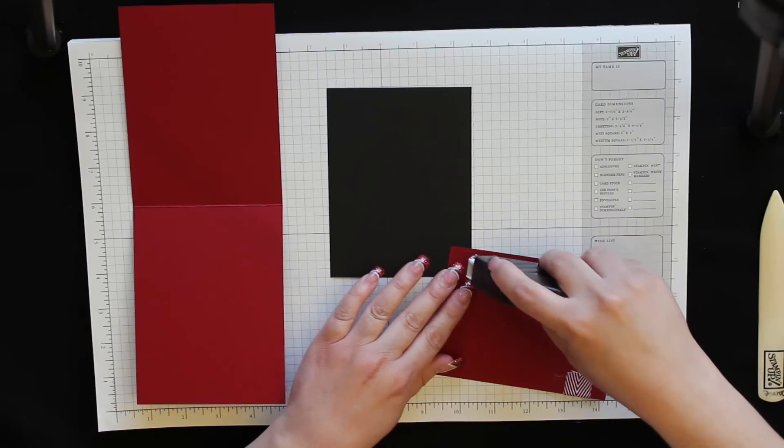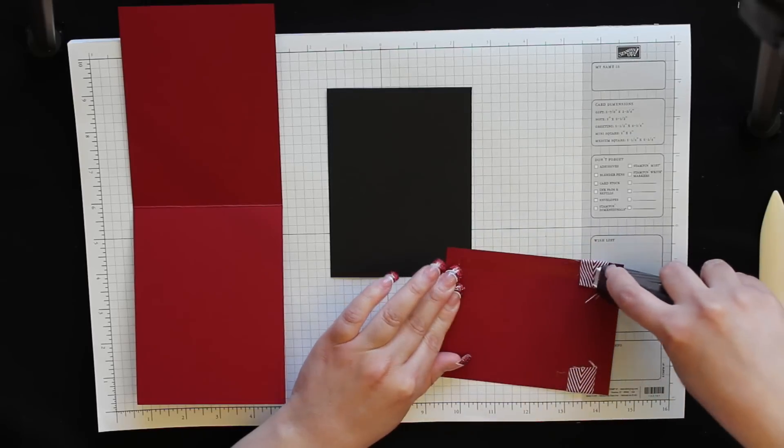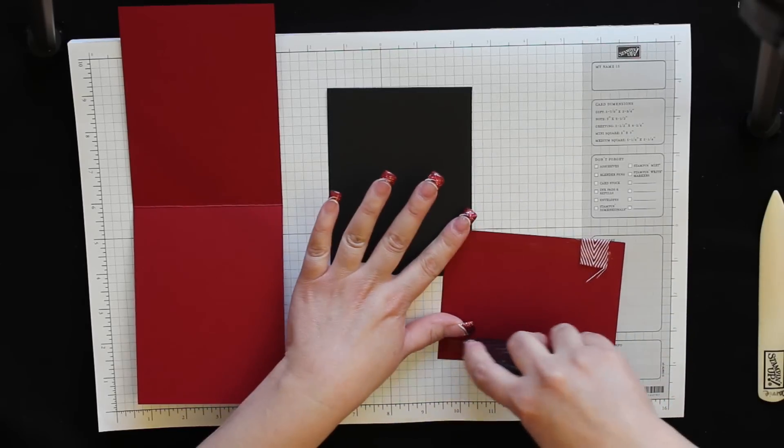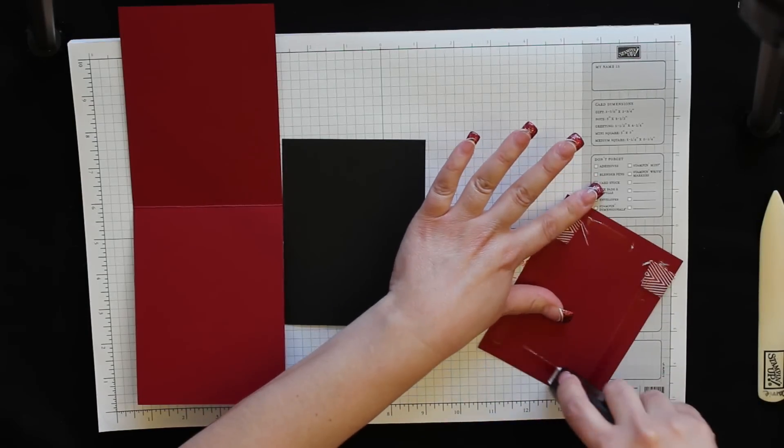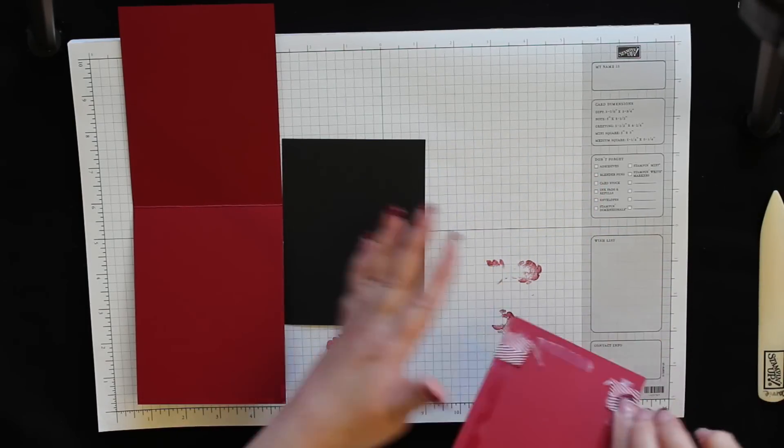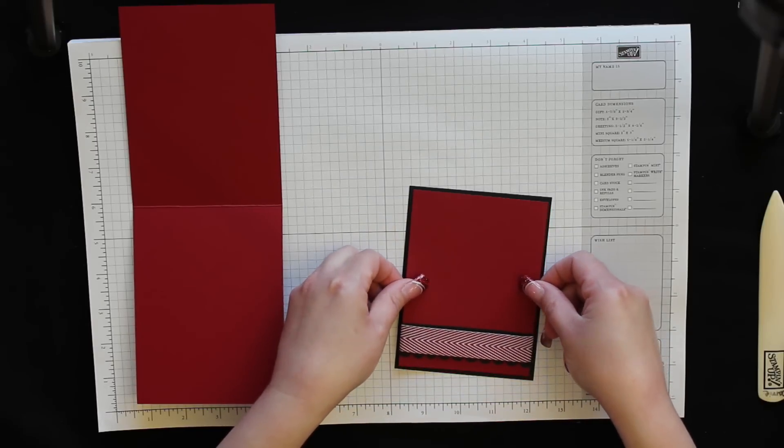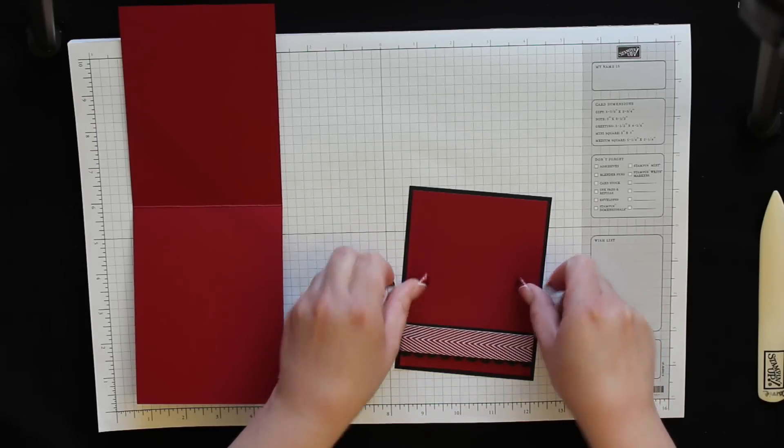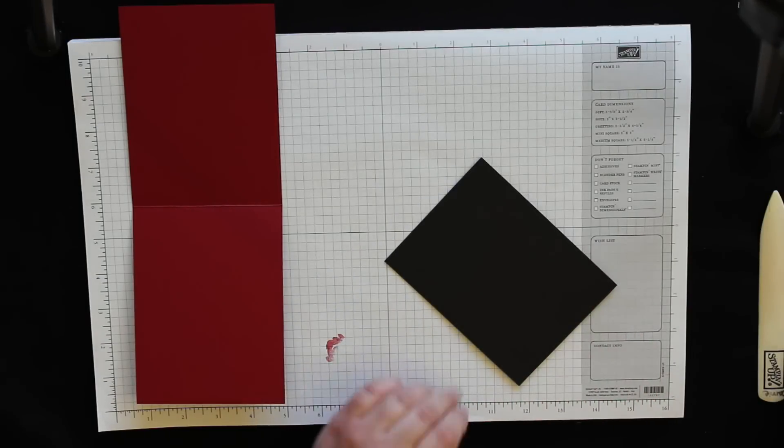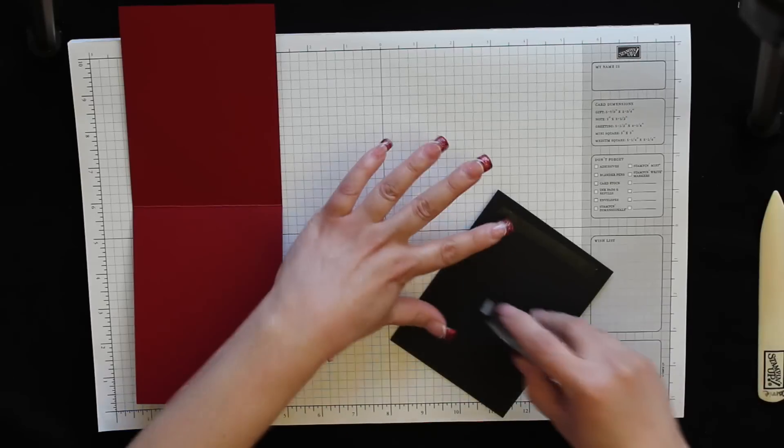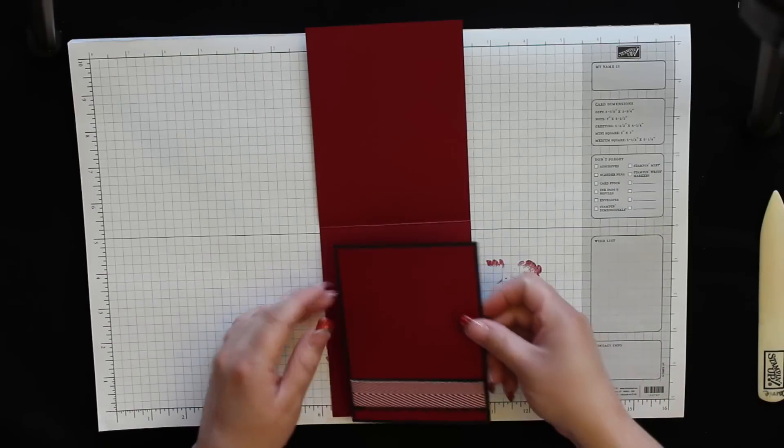Now using more fast fuse, put that on the back. The only reason I'm using fast fuse is because this ribbon adds quite a bit of thickness between these two layers of cardstock. So I really want it to stick. Center that on the basic black. And now that I'm going just back to cardstock onto cardstock, I can again use my snail adhesive. And just put that in the center.